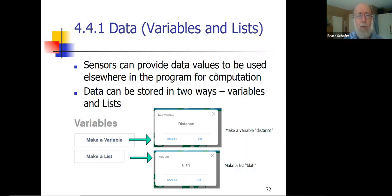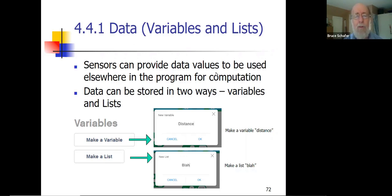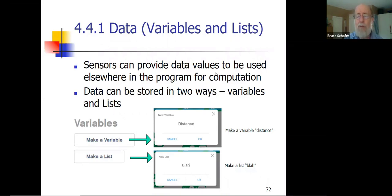So, variables are first, and we'll show live in a little while. There's a menu called Variables, and the first thing on the menu is Make a Variable, and the second thing is Make a List. That's kind of shown here on this slide.